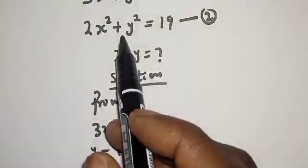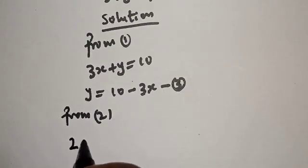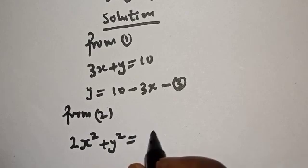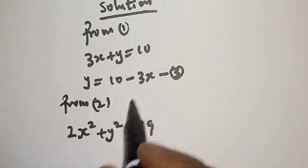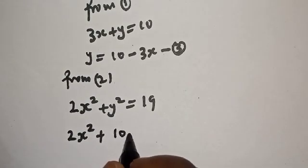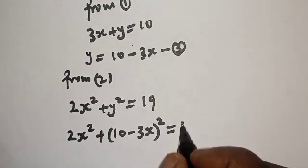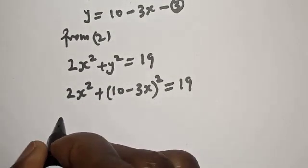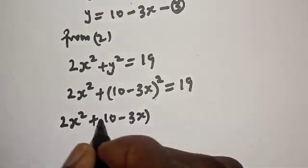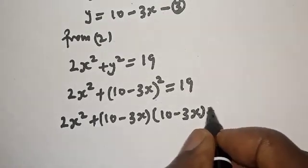Then we can substitute equation 3 into equation 2. From equation 2: 2x squared plus y squared is equal to 19, and substituting y equals 10 minus 3x gives us 2x squared plus (10 minus 3x) squared is equal to 19.